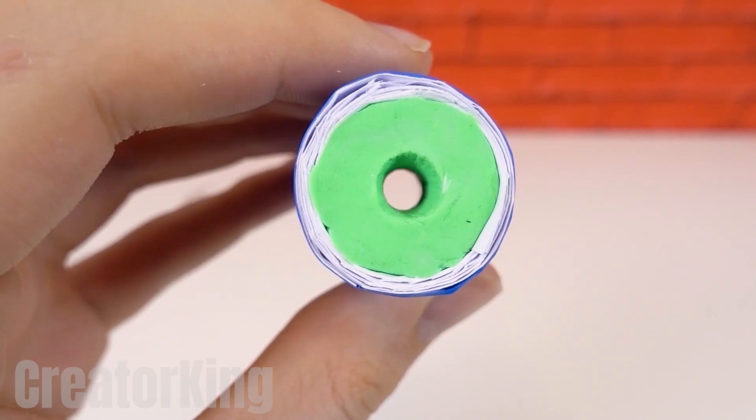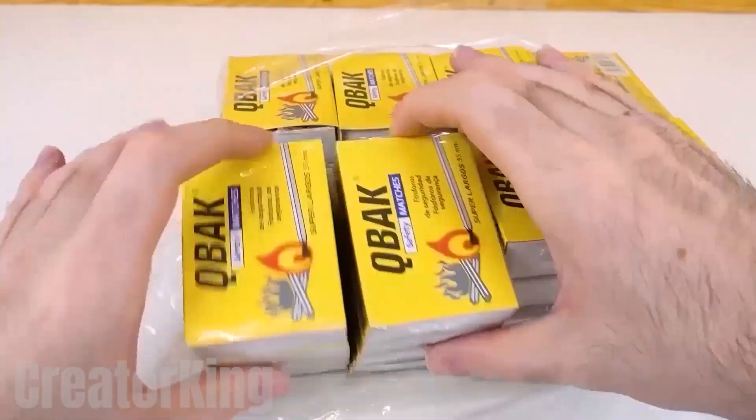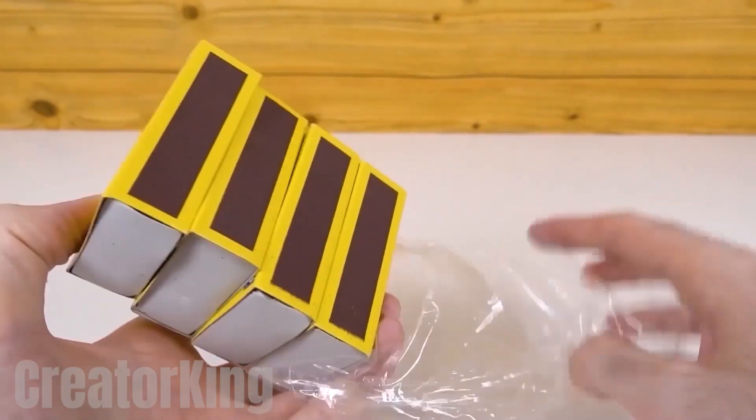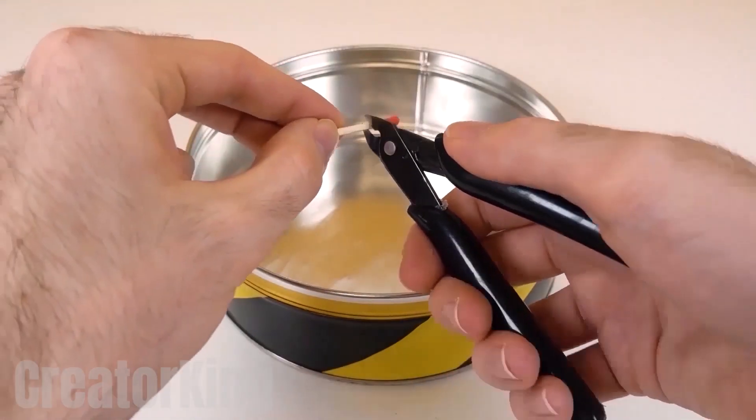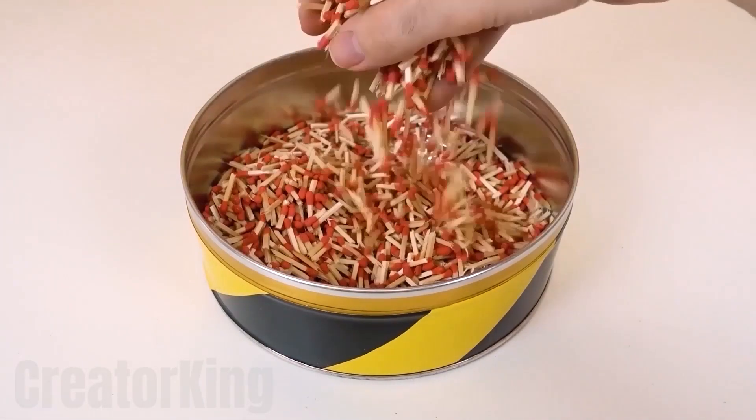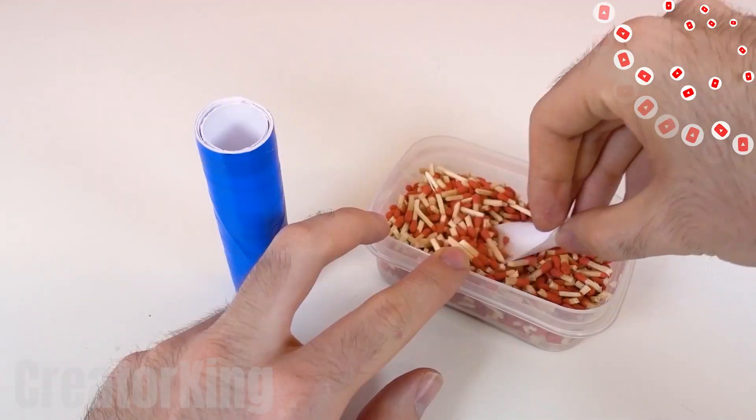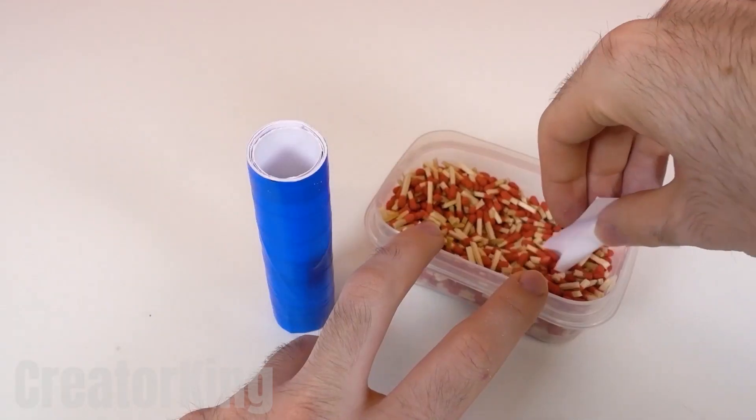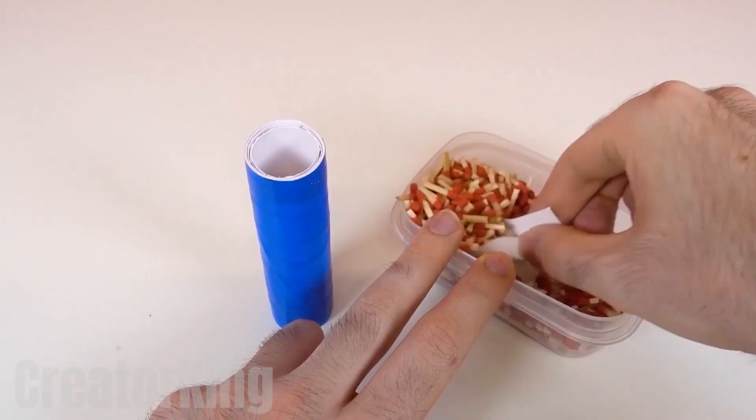Now comes the interesting part. Open a pack of matches that you keep in case of a zombie attack and start cutting off their heads with pliers. We're going to need hundreds of them, so be patient. Once we fill the container with matches and find a place to dispose of the extra sticks, start to fill our tube with them using something to scoop them up easily. From time to time, compact them with a stick to make sure that as many fit in as possible. It won't be too long before this baby flies like a space rocket.